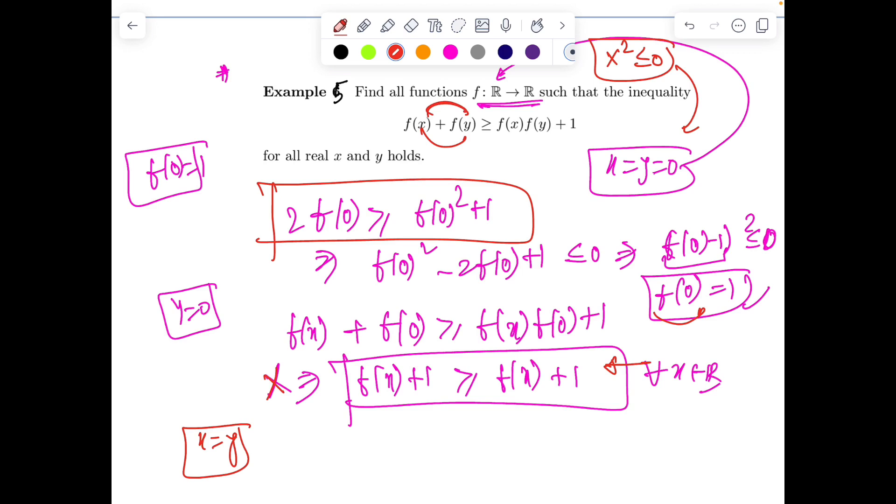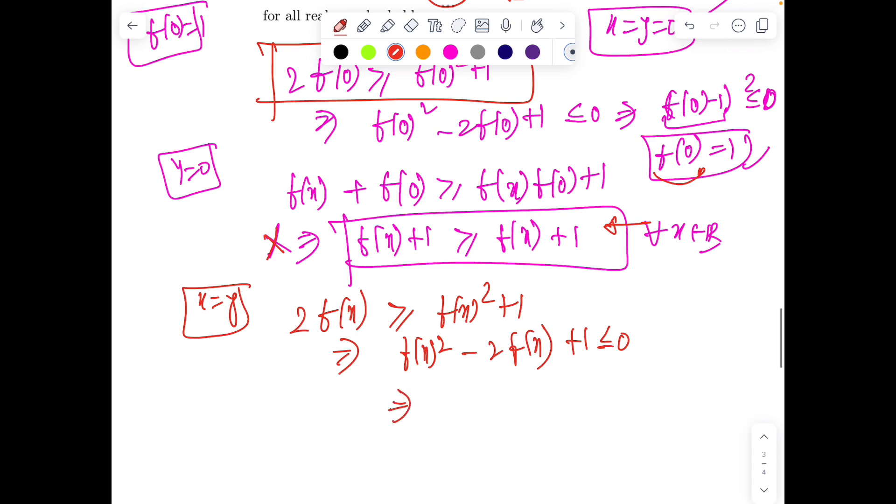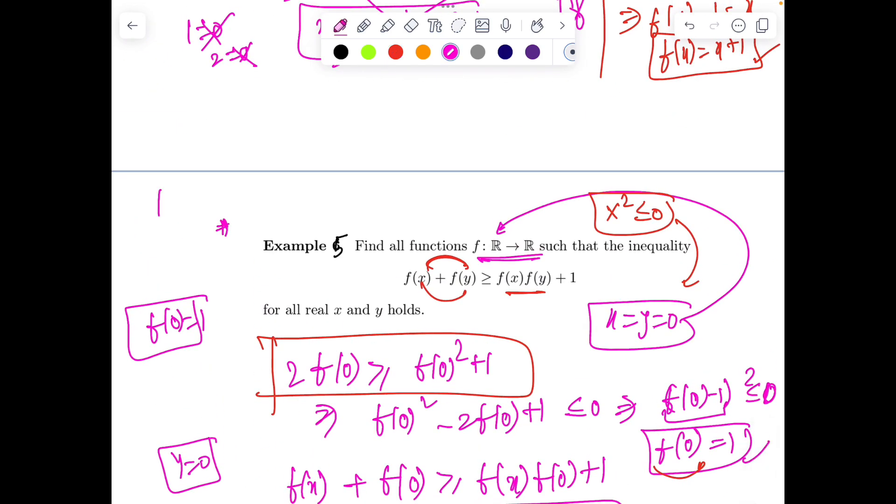The motivation: since something squared became less than or equal to 0, it feels like f(x) should be uniquely fixed. Put x = y. Then 2f(x) ≥ f(x)² + 1, which gives f(x)² - 2f(x) + 1 ≤ 0, so (f(x) - 1)² ≤ 0. The only possibility is equality to zero. Hence, the only unique solution is f(x) = 1 for all x.